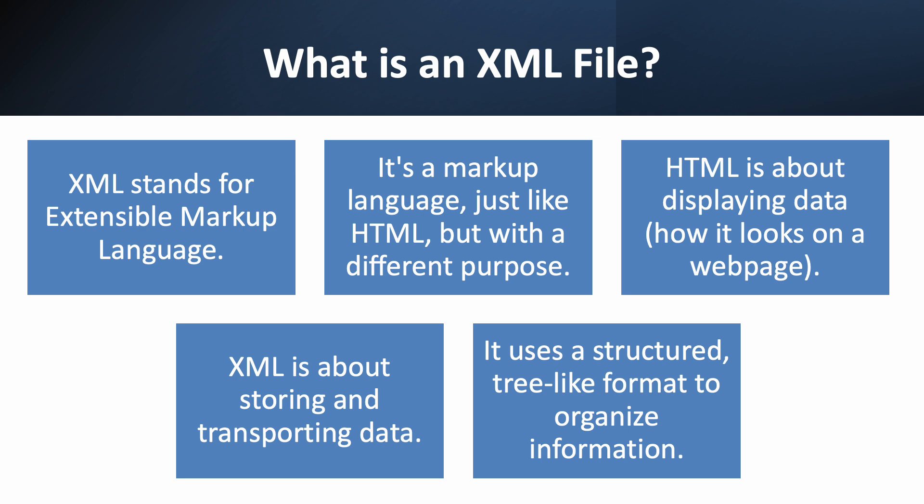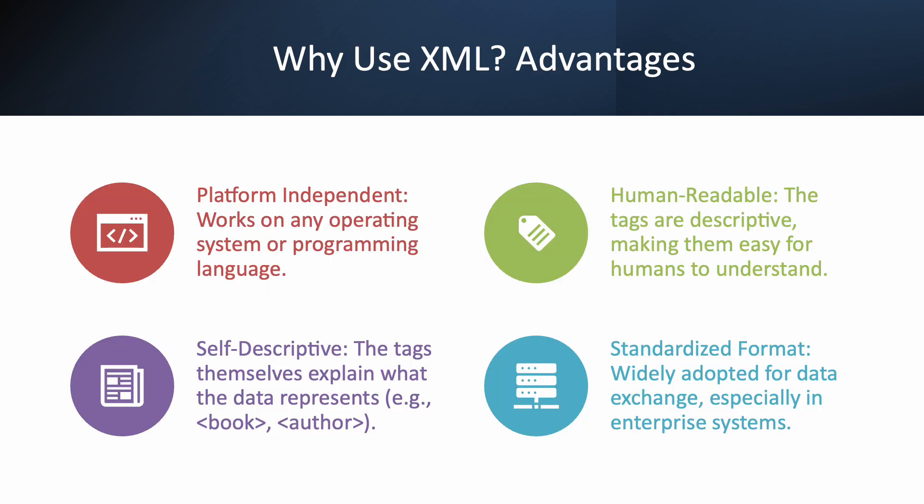This makes it a great way to share data between different applications and services. So why do we use XML? It has some fantastic advantages. First, it's platform independent — a file created on a Windows machine can be easily read and understood by a program running on Linux or a Mac. Second, it's human readable. If you open an XML file, you can often get a good idea of what's inside just by looking at the tags — a tag like 'customer' or 'product' is pretty clear. Third, it's self-descriptive: you don't need a separate document to figure out what the data means — the tags are the documentation. Finally, it's a standardized format that's been around for a long time and is still a reliable workhorse for data exchange, especially in older and larger enterprise systems.